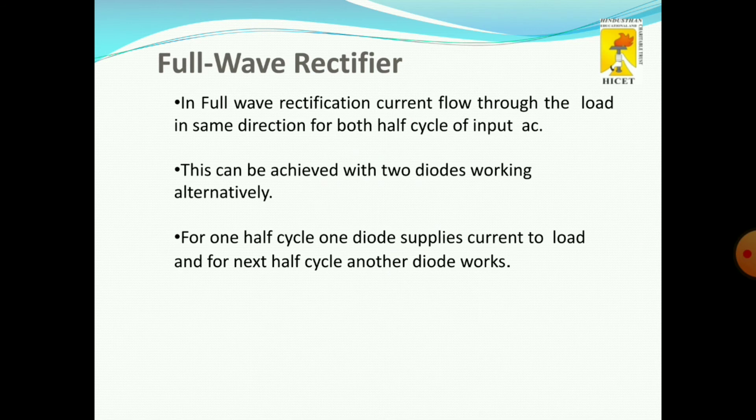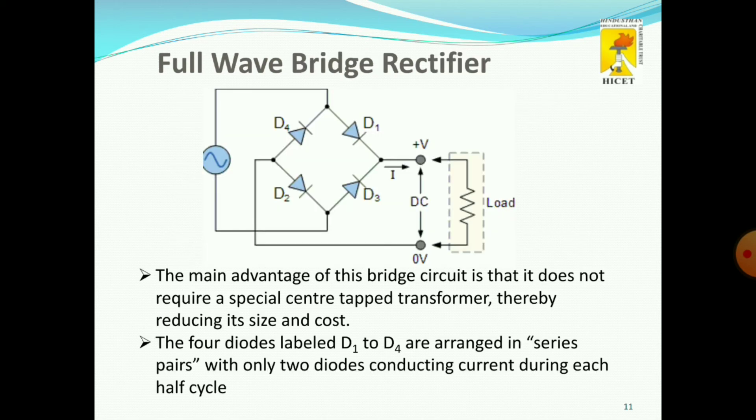In a full wave rectifier, the current flows through the load in the same direction for both half cycles of the input. Here we use four diodes: D1, D2, D3, and D4, along with the AC supply and the load. The main advantage of the full wave bridge rectifier is that it does not require a center tap transformer, thereby reducing the size and cost.